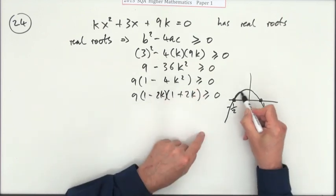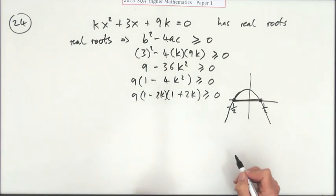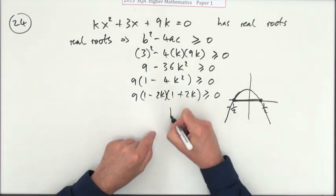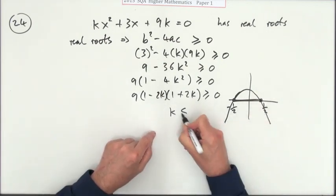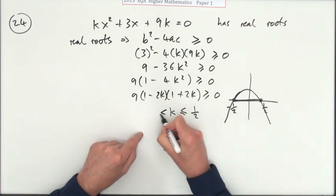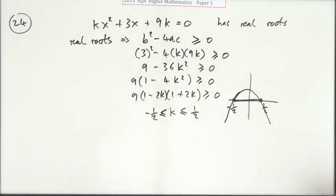So that means the answer is k can be less than or equal to a half or greater than or equal to negative a half.